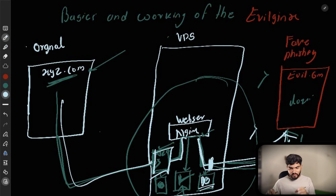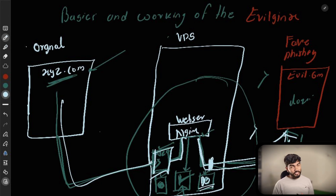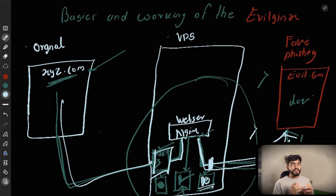This process is a little complex but good systems have complex designs. EvilGinx is essentially a reverse proxy with a few additional files added for easier management. If you still have trouble understanding, you can search 'reverse proxy' on Google to get a clearer picture. That's all for this video — if you have any doubts, you know what to do, and see you in the next one.